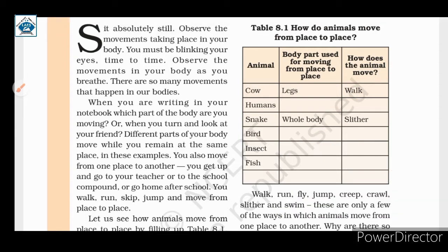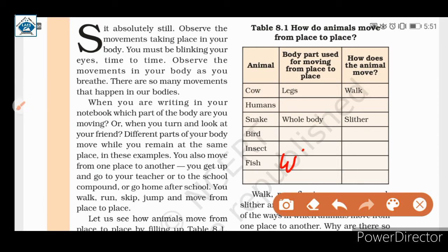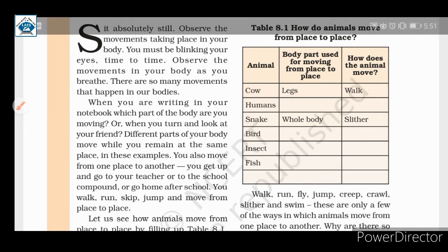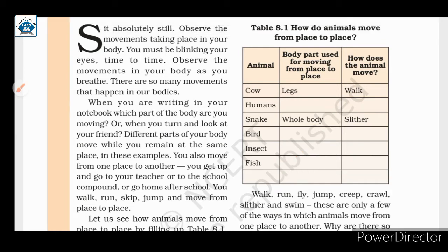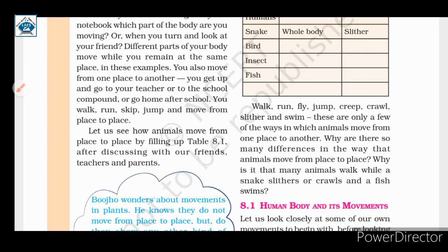The last one is fish. In the case of fish, the whole body moves, and the movement is swimming — because fish swim. So this is our Table 8.1. Different animals move in different ways: by walking, running, flying, jumping, creepy crawling, slithery movement, or swimming. These are the few different ways by which animals move.